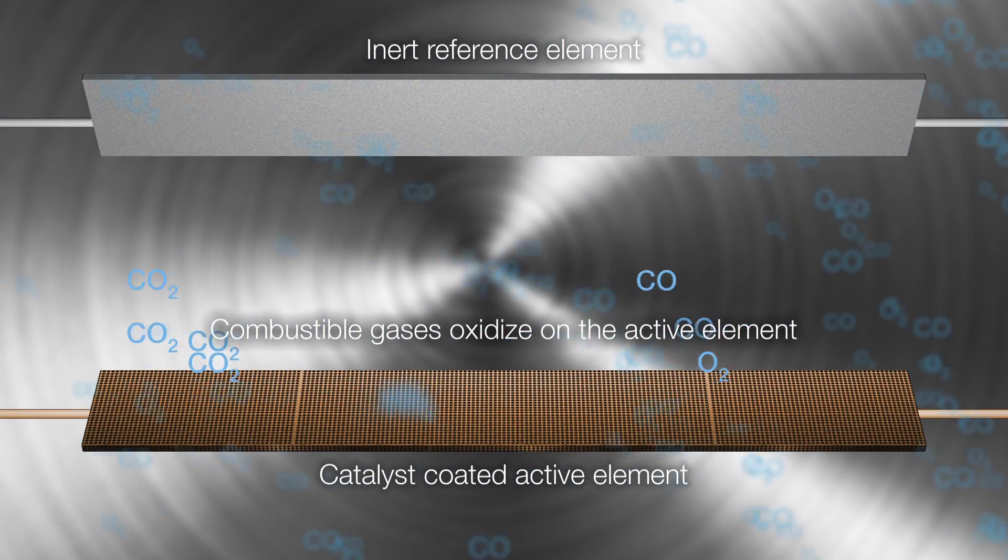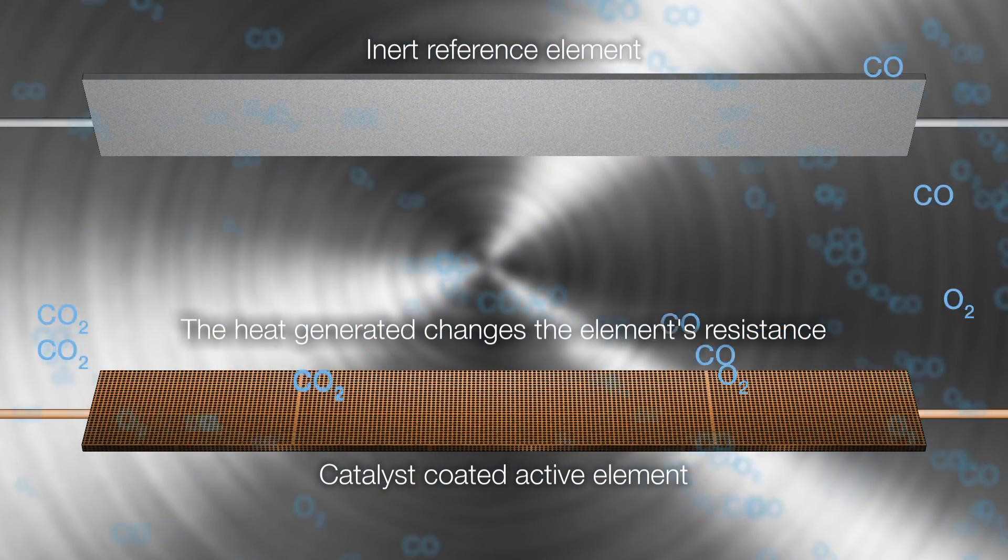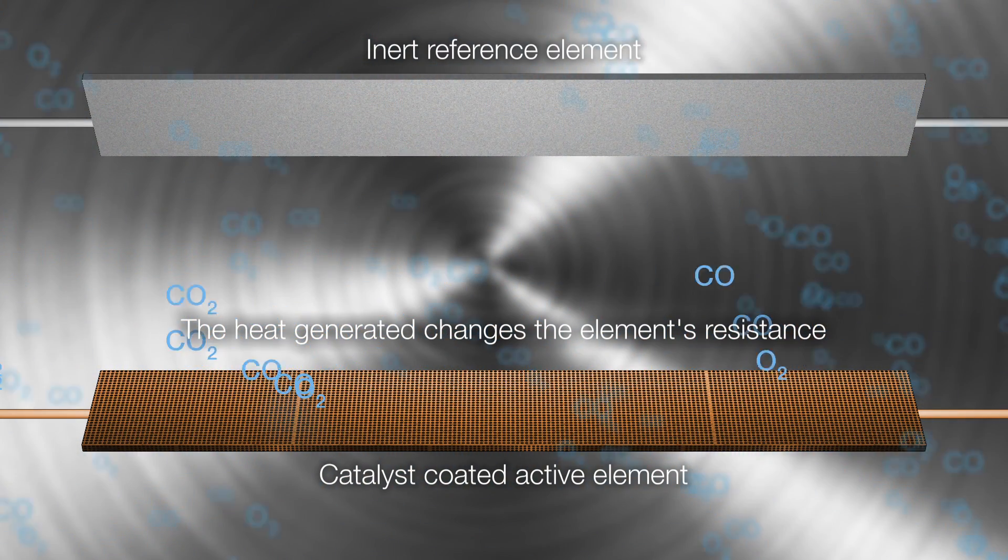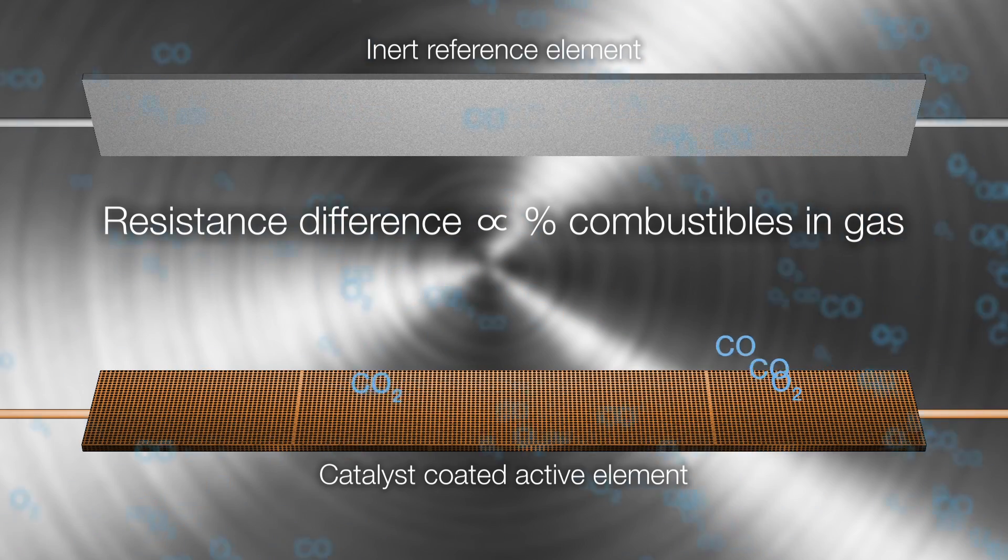The heat generated by the oxidation causes a temperature difference between the active and the reference elements. This temperature difference produces a resistance relationship between the two elements, that is directly proportional to the concentration of combustibles in the sample gases.